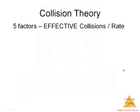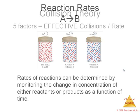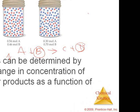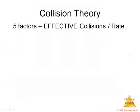If I have something more complex — say A plus B gives me C plus D — I can monitor any one of these four species. I can monitor A, B, C, or D, and they will all give me the same answer about the rate.